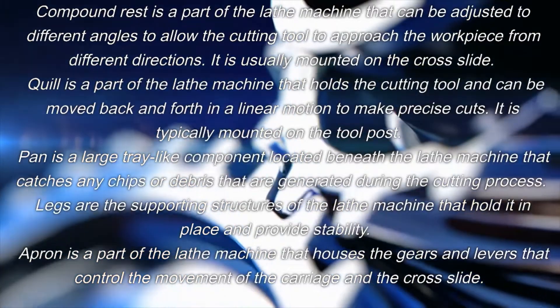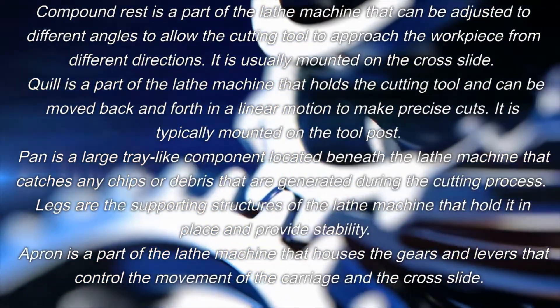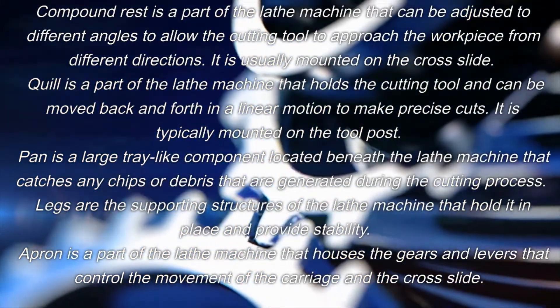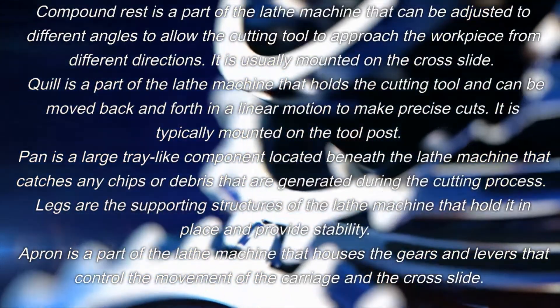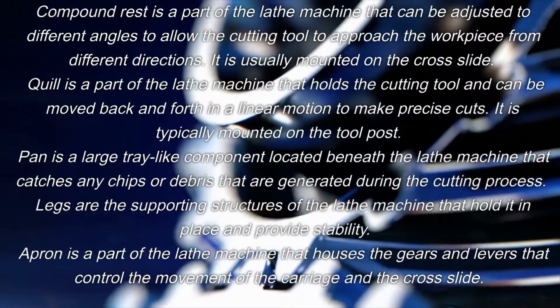Compound rest: a part of the lathe machine that can be adjusted to different angles to allow the cutting tool to approach the workpiece from different directions. It is usually mounted on the cross slide.